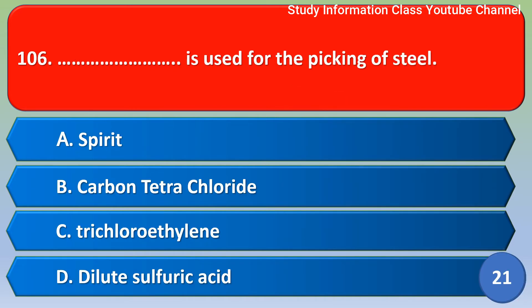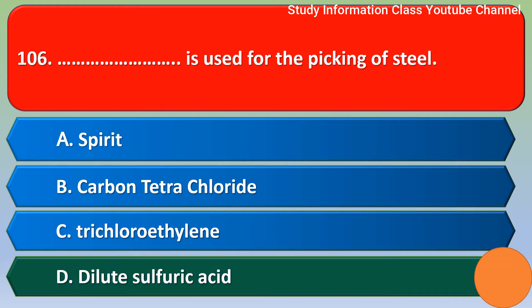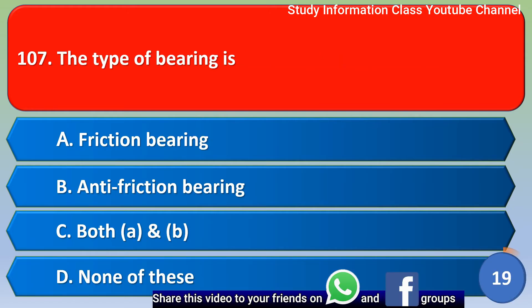Next question: what is used for the pickling of steel? Option A: spirit, option B: carbon tetrachloride, option C: trichloroethylene, option D: dilute sulfuric acid. The correct answer is option D, dilute sulfuric acid.